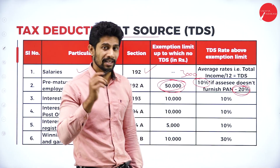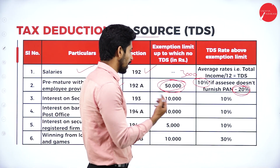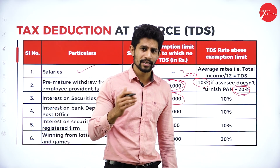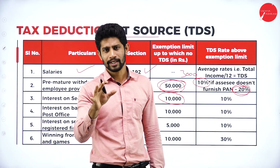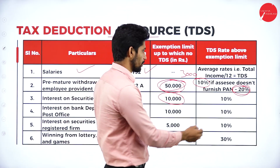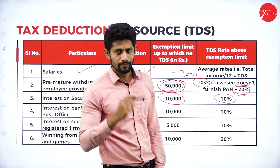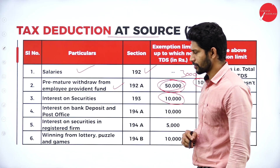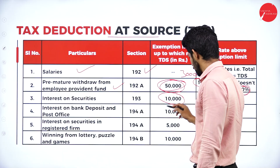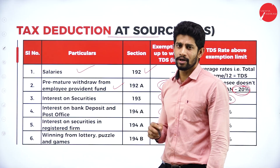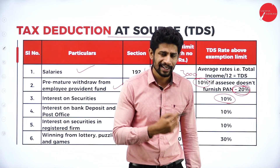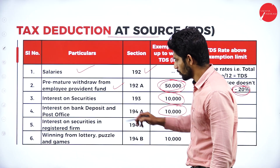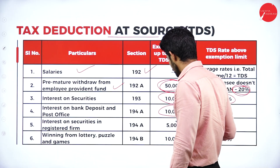For interest on securities: up to 10,000 rupees no TDS; more than 10,000 rupees, 10 percent TDS is deducted. Similarly, for interest on bank deposits and post office deposits: up to 10,000 rupees no TDS; more than 10,000 rupees, 10 percent TDS. For interest on securities in a registered firm: up to 5,000 rupees no TDS; more than 5,000 rupees, 10 percent TDS.